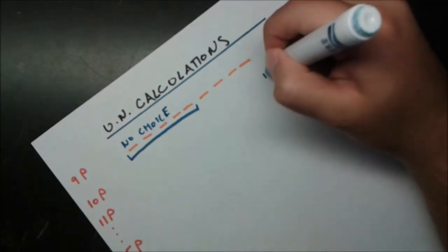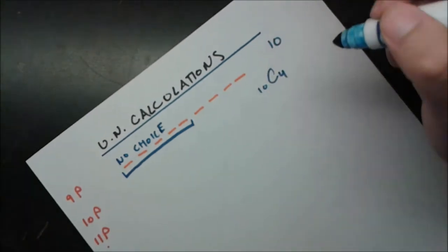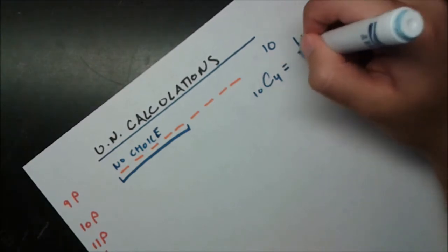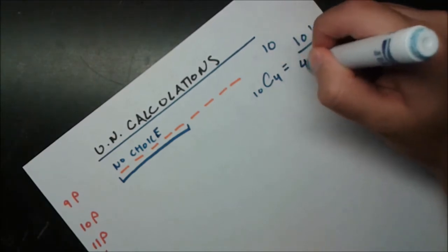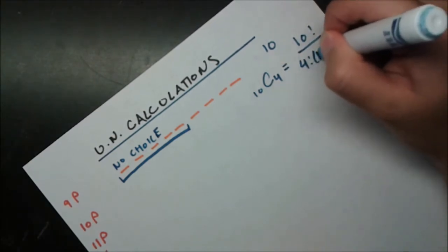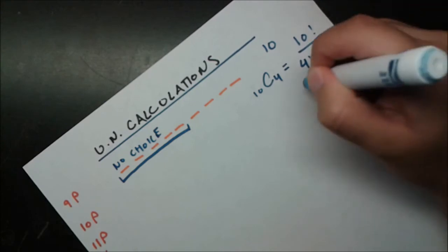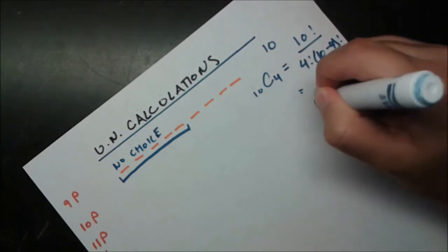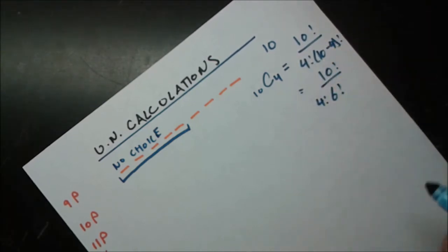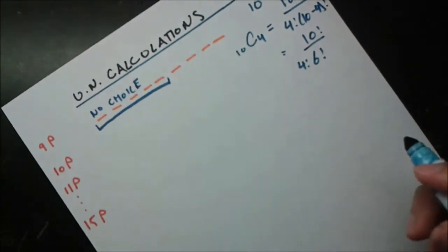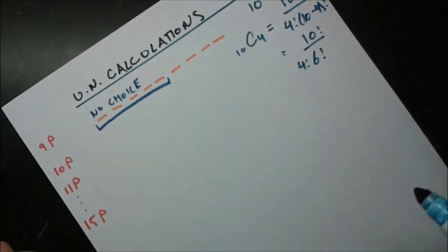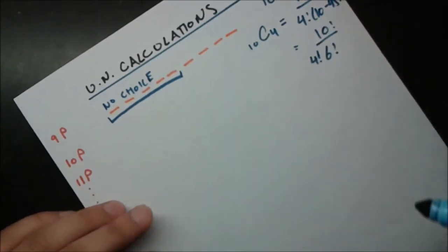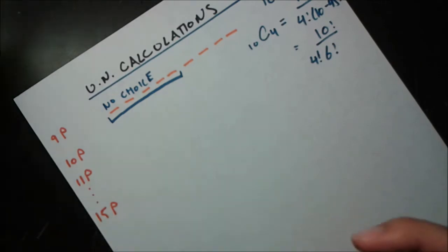So we need to choose four out of 10 people. Mathematically, that's written as 10 choose 4. We calculate that as 10 factorial over 4 factorial times 6 factorial. You can punch that into a calculator or calculate it by hand — either way you'll get the answer.